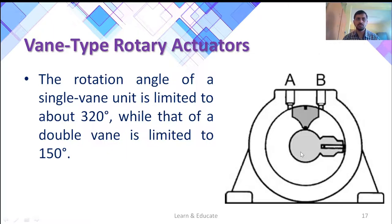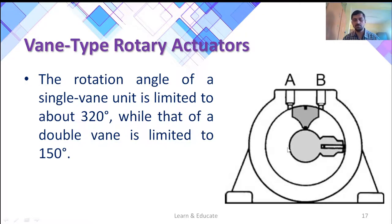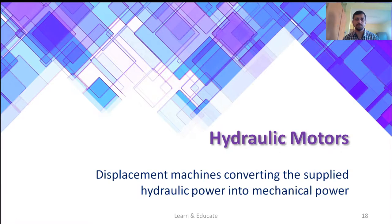The third type is the vane type, which can be a single vane as shown in this diagram, or we can have another vane added in the opposite direction — a double vane configuration. The difference is in the angle of rotation: a single vane unit is limited to 320 degrees, but a double vane is limited to only 150 degrees, because the additional vane restricts the rotation further.